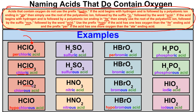For HClO2: the hydrogen is bonded to chlorite (ClO2). Since this polyatomic ion ends in -ite, the -ite turns into an -ous ending. We use the root of chlorite which is chlor, giving us chlorous acid. For HClO: this polyatomic ion has one less oxygen than chlorite, so we use the prefix hypo. The root of hypochlorite is chlor, we add the -ous ending for hypochlorous acid.